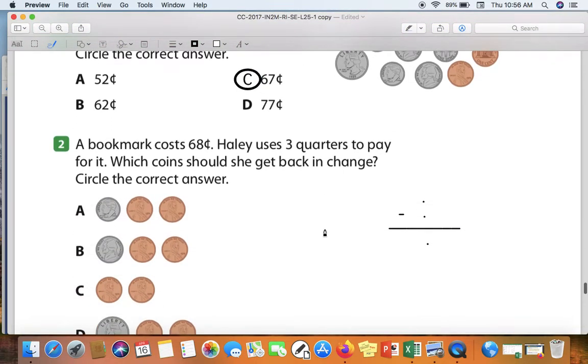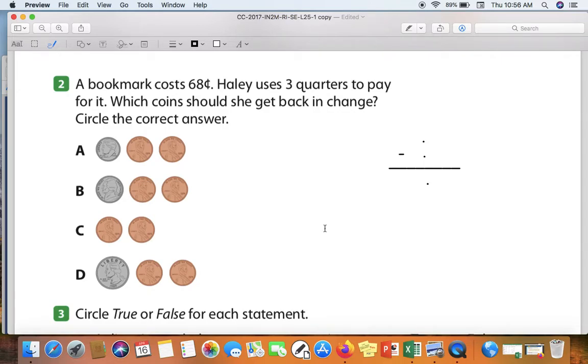A bookmark costs 68 cents. Haley uses three quarters to pay for it. Which coins could she get back as change? Circle the correct answer. In order to answer this question, you have to know how much money three quarters is worth. Remember when we count quarters, we say 25, 50, 75, $1. It takes four quarters to make a dollar. So if I have three quarters, that means that I have 75 cents.